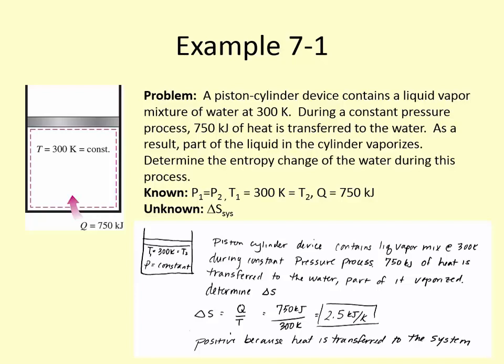Using the isothermal entropy equation, ΔS = Q/T = 750 kJ / 300 K = 2.5 kJ/K. This number is positive because heat was being added to the system. If instead we were removing heat, Q would be negative: ΔS = −750 kJ / 300 K = −2.5 kJ/K, giving a negative entropy change indicating entropy decrease.